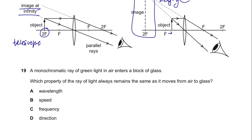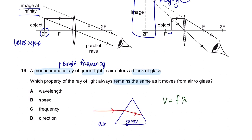Question 19. A monochromatic ray of green light in air enters a block of glass. Which property of the light remains the same as it moves from air to glass? The speed of light changes when it enters from air to glass, and the wavelength is affected by this. The only property which remains constant is frequency. So the answer is C.